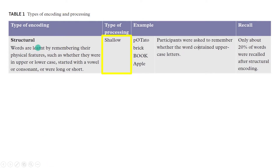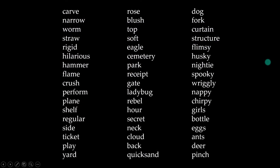We actually used a structural type of encoding, which is remembering something based on its features — in this case, the words' physical features, like upper or lower case, or for us, the letter R. Okay, that was level one. Let's go a little bit deeper.